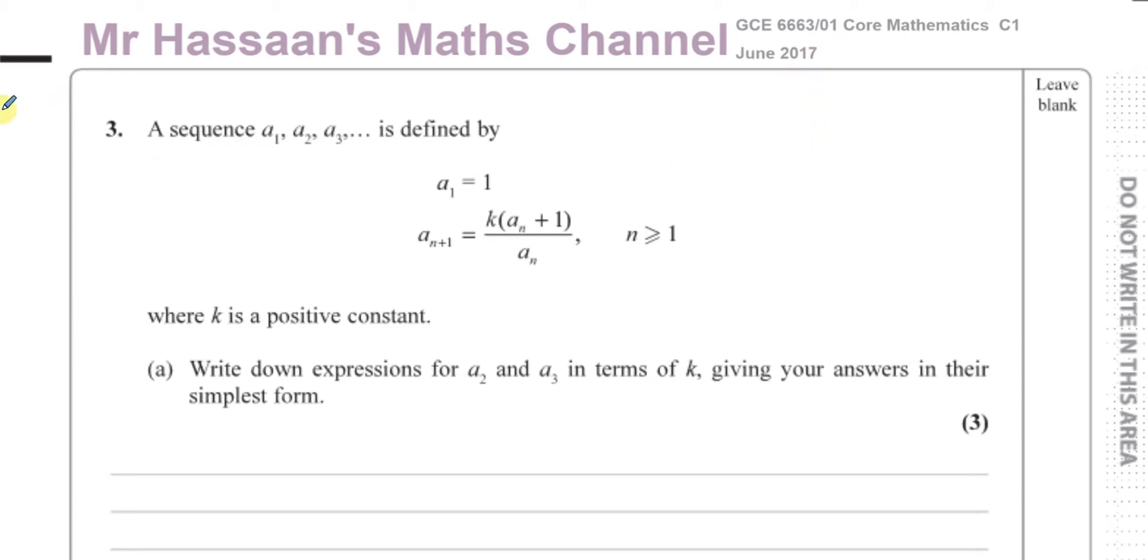This question here is about sequences and recurrence relationships. We've been told that a sequence a1, a2, a3 and so on is defined by a1 equals 1 and a(n+1) equals k times (a_n + 1) over a_n.